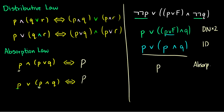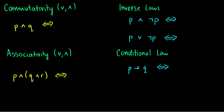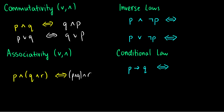We have a few more straightforward laws. The commutativity law says we can flip the order: p AND q is equivalent to q AND p, and p OR q is equivalent to q OR p. Associativity says p AND (q AND r) is equivalent to (p AND q) AND r — we can regroup, and this works for OR as well. Make sure both connectives are the same, otherwise we're dealing with distributivity.